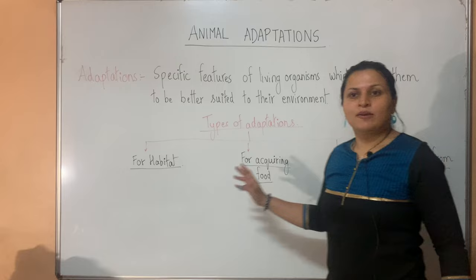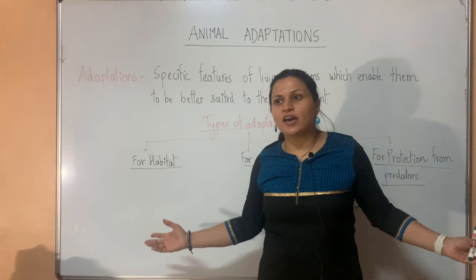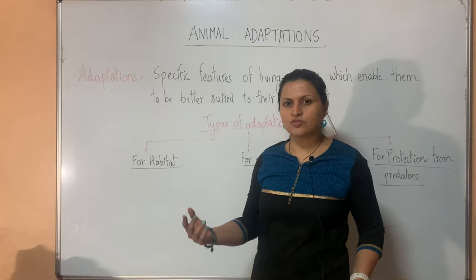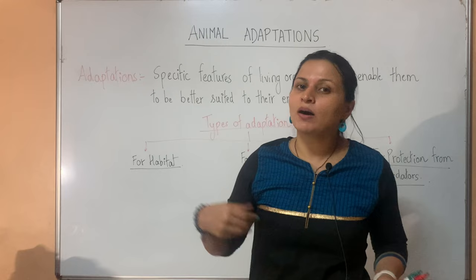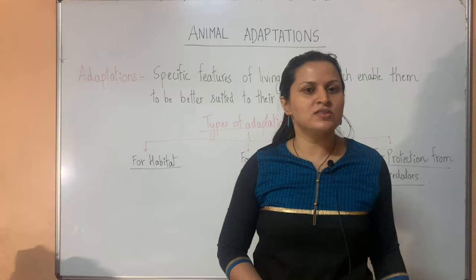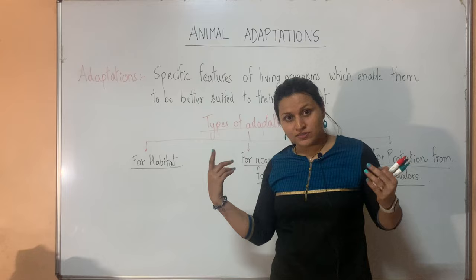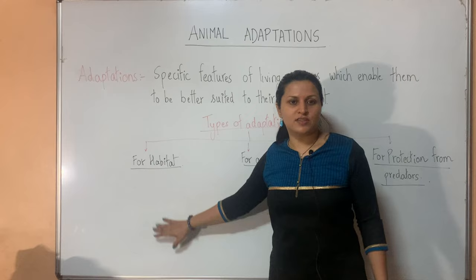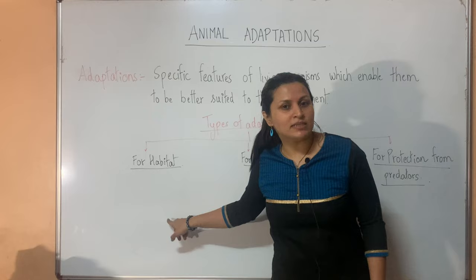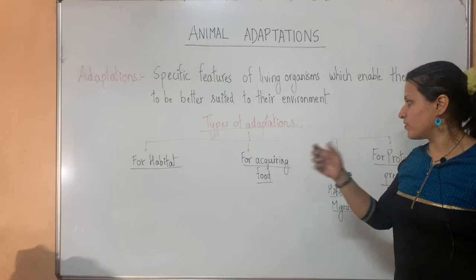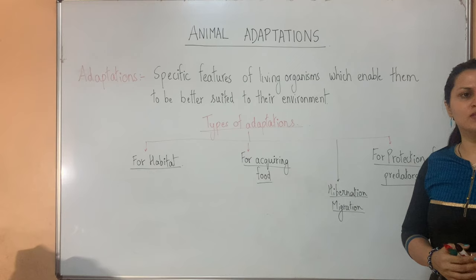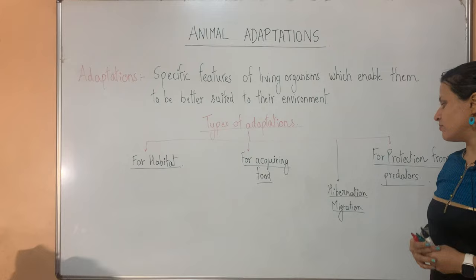We are going to look at each of these adaptations. Animals living in mountains will have different adaptations, those in plains will have others, and polar regions will have still different kinds. In this class we will look at all adaptations of animals for habitat. In the next classes we'll cover adaptations for acquiring food, protection from predators, and then hibernation and migration.